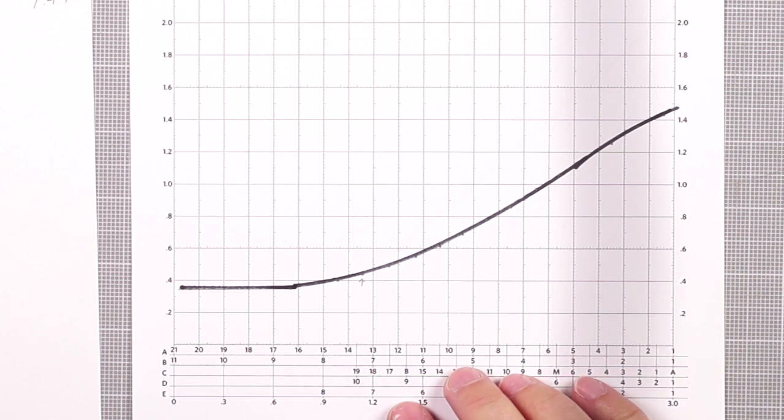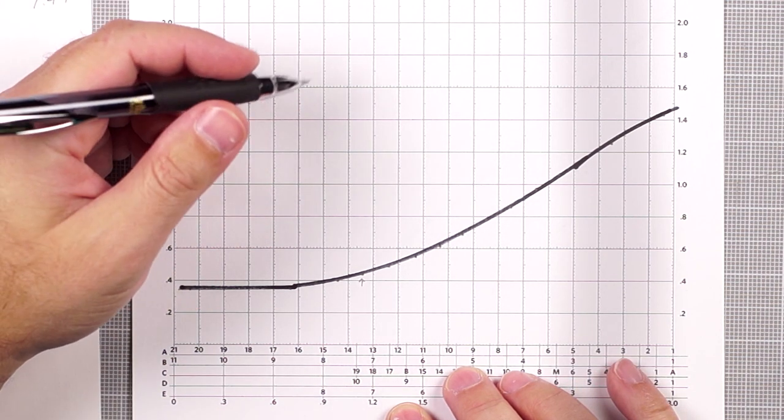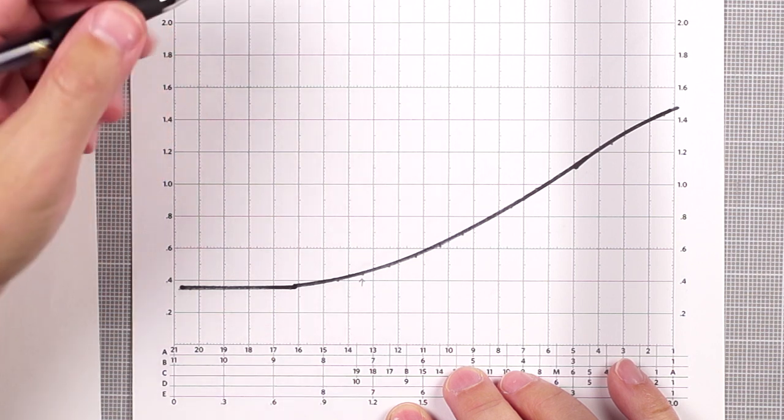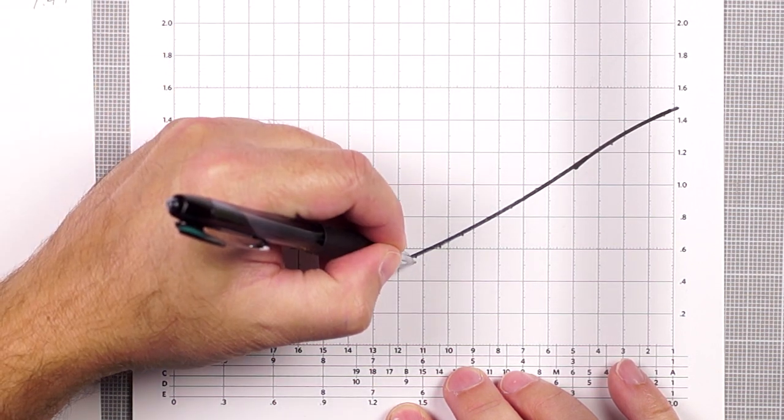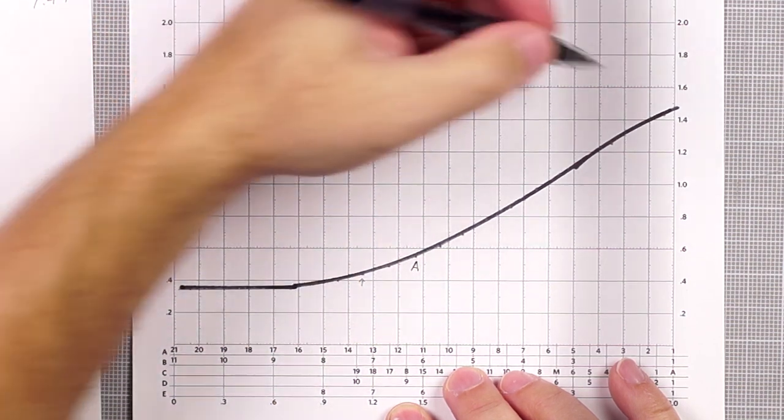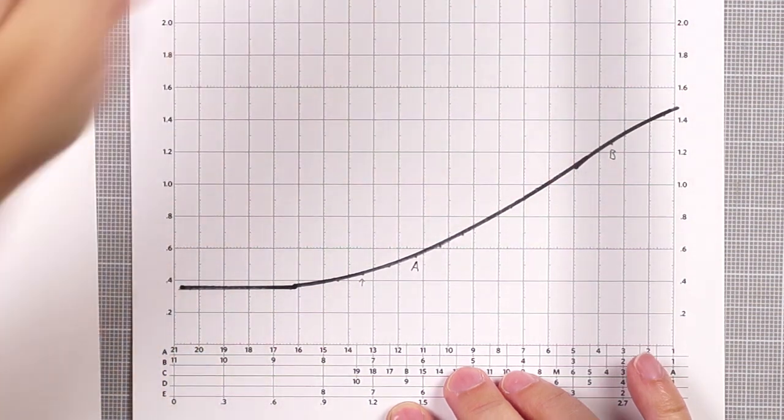So let's see what the gamma is compared with that since it's the same film but different developer. Again, we're going to choose two parts on the straight line of the curve and check the difference. Looking at the straight line, I feel like this is a good part for A. And before we get to the shoulder, this looks like a good point for B.